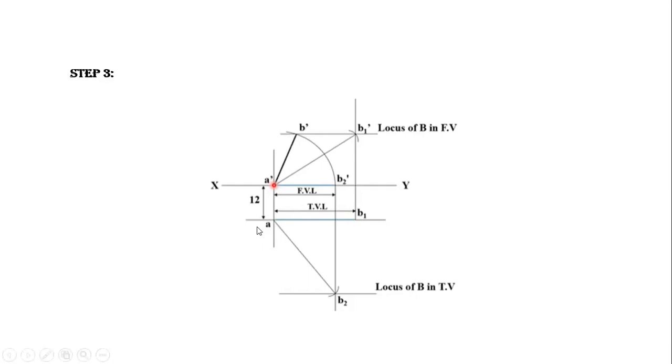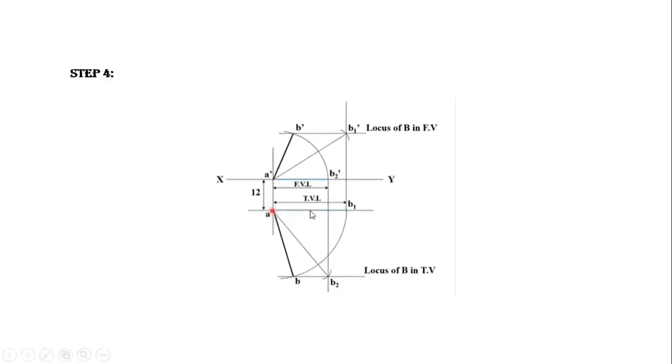The next step, we have to repeat the same for the top view also. Take radius between AB1 with A as center. AB1 as radius from the point B1, draw an arc. It will meet at point B on the locus of B in top view. Join AB.